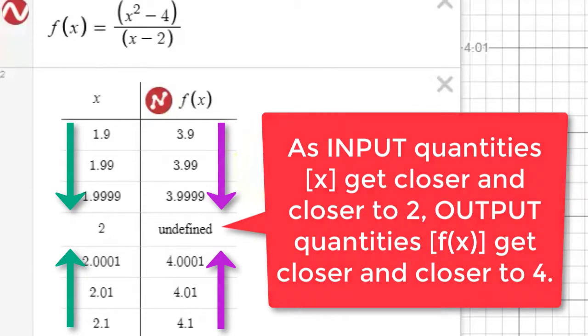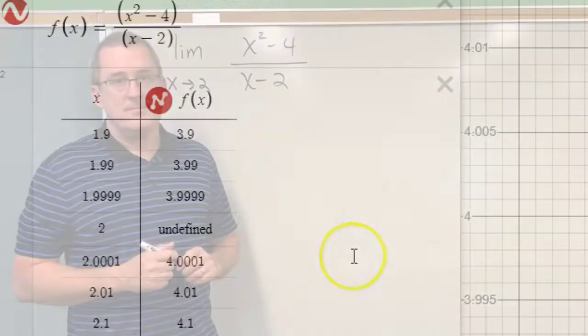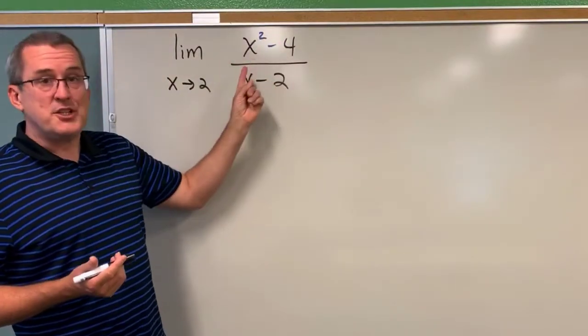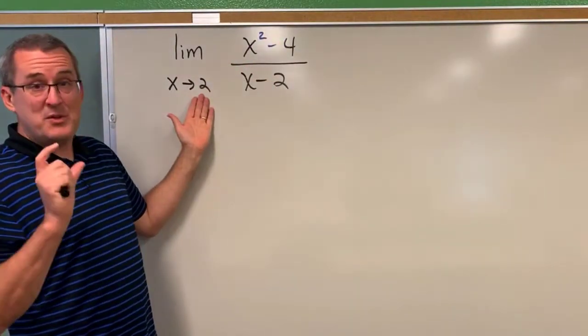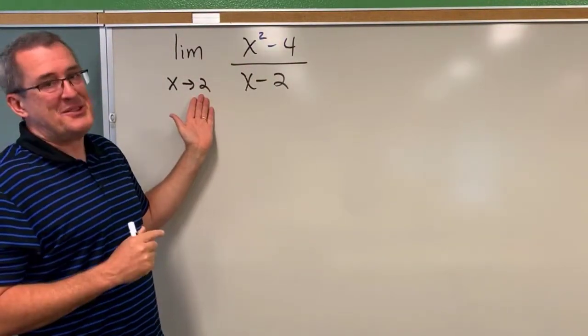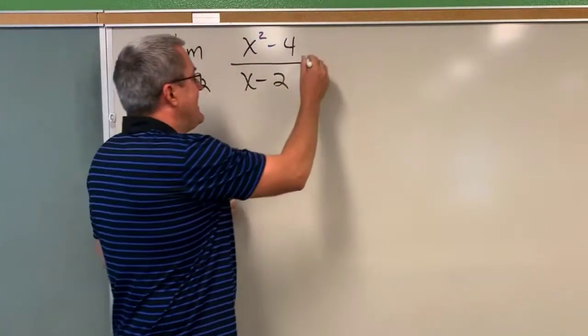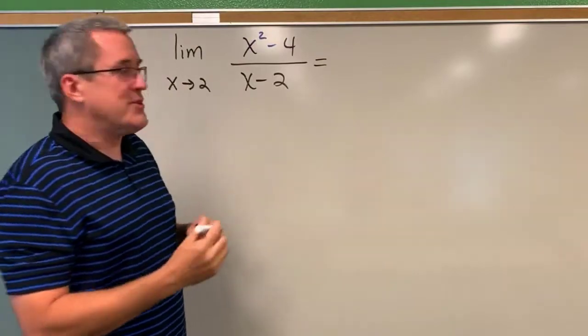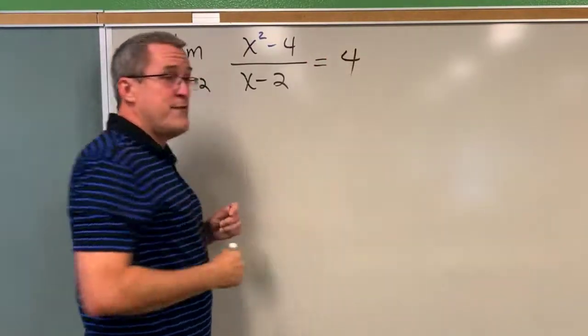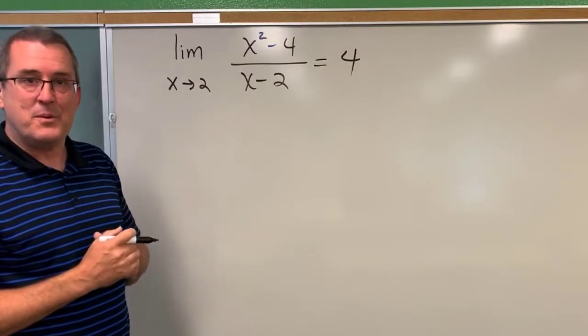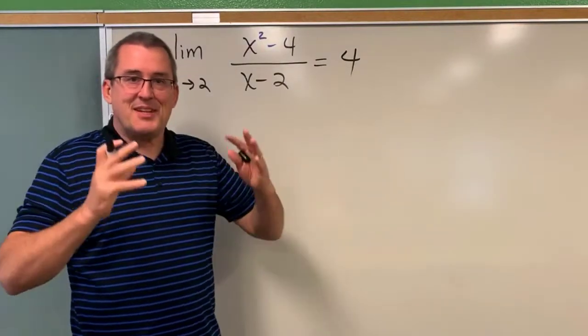Next, we'll look at this from a more algebraic approach. So we've explored the behavior of this function for input values nearby to 2 but not equal to 2. And we've discovered that this function gets nearer and nearer, gets closer and closer to output values of 4 for input values of x nearby 2.